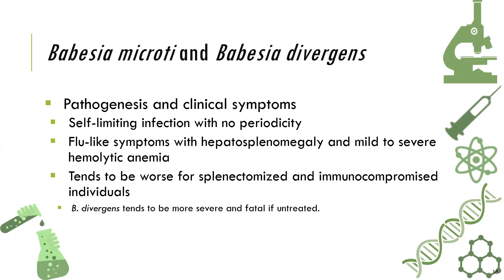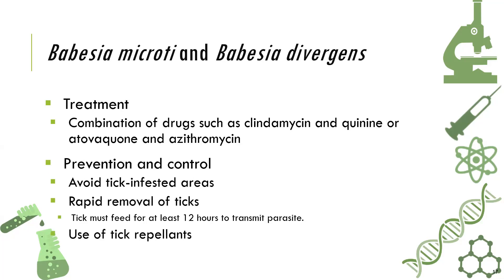Flu-like symptoms with hepatosplenomegaly and mild to severe hemolytic anemia tend to worsen in splenectomized and immunocompromised individuals. Babesia divergens tends to be more severe and fatal if untreated, unlike microti. Treatment is almost similar to malaria and can be treated through the combination of drugs such as clindamycin and quinine, or atovaquone and azithromycin. Prevention and control involves elimination, irradiation, fumigation of tick-infested areas, and removal of ticks.